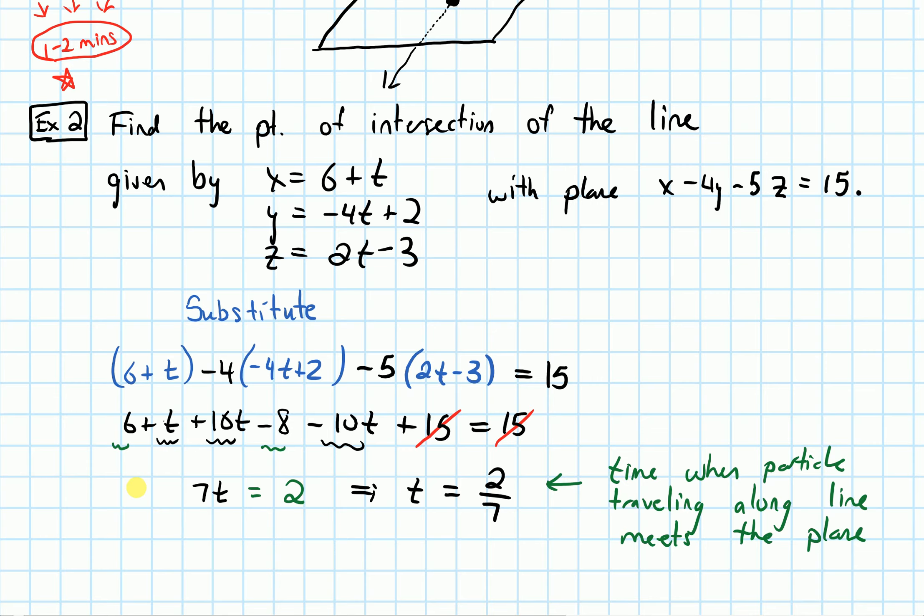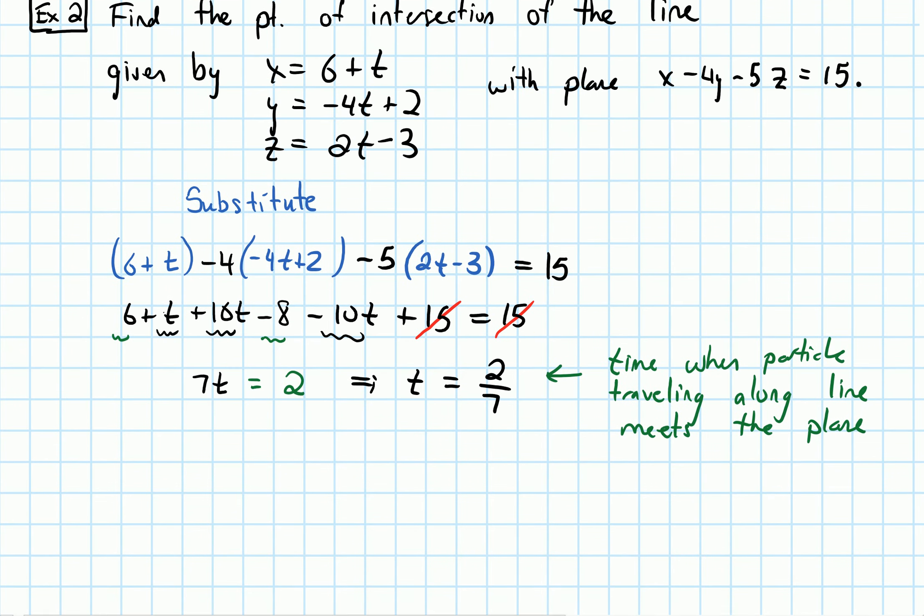So t = 2/7. But the question wasn't to find the time when it happened, it was to find the point of intersection.